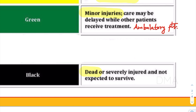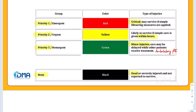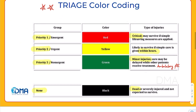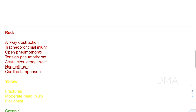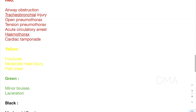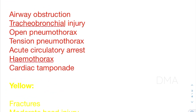Finally, the black category patients are usually the dead ones or moribund patients. With that being established, different conditions have been categorized into these different colors, so let's look at them one by one.